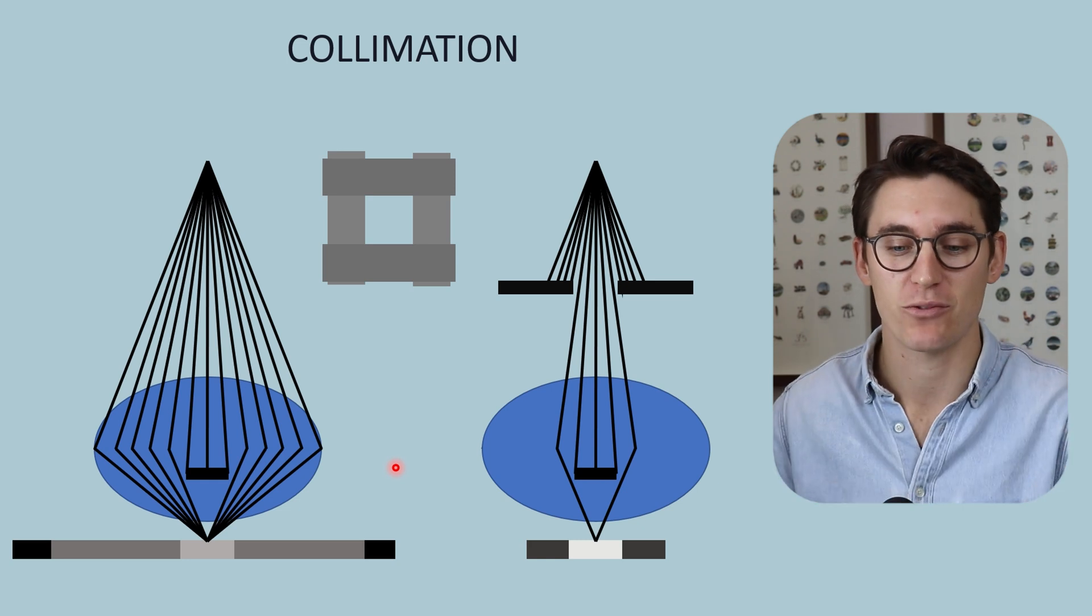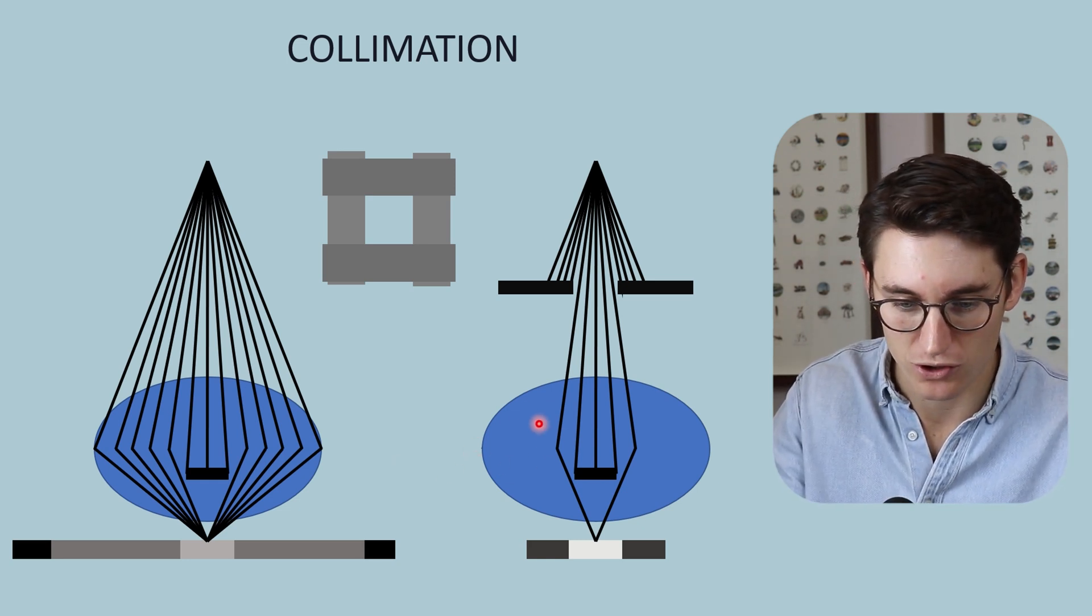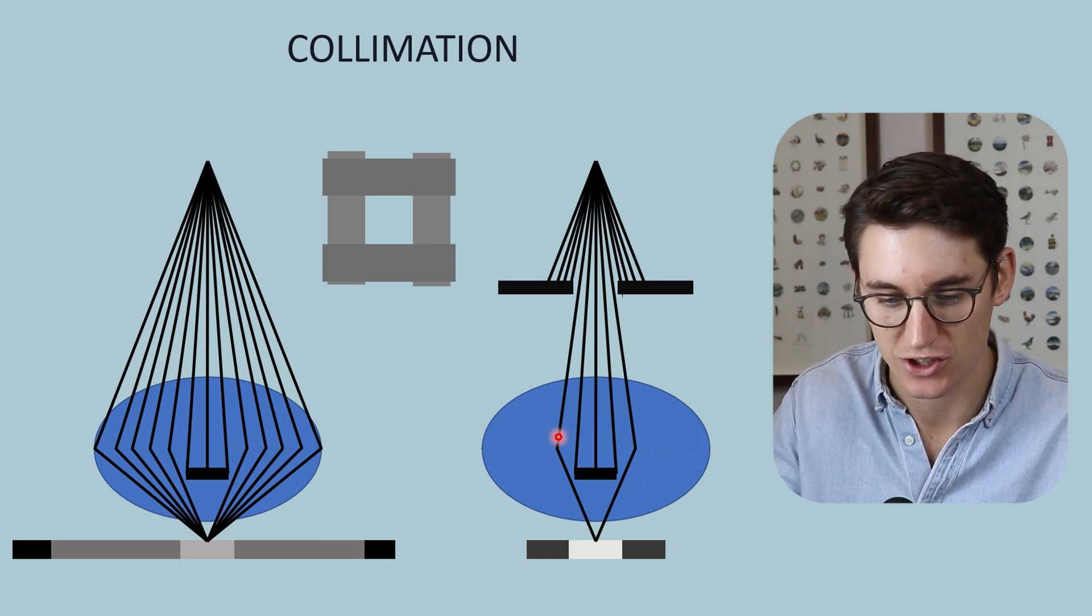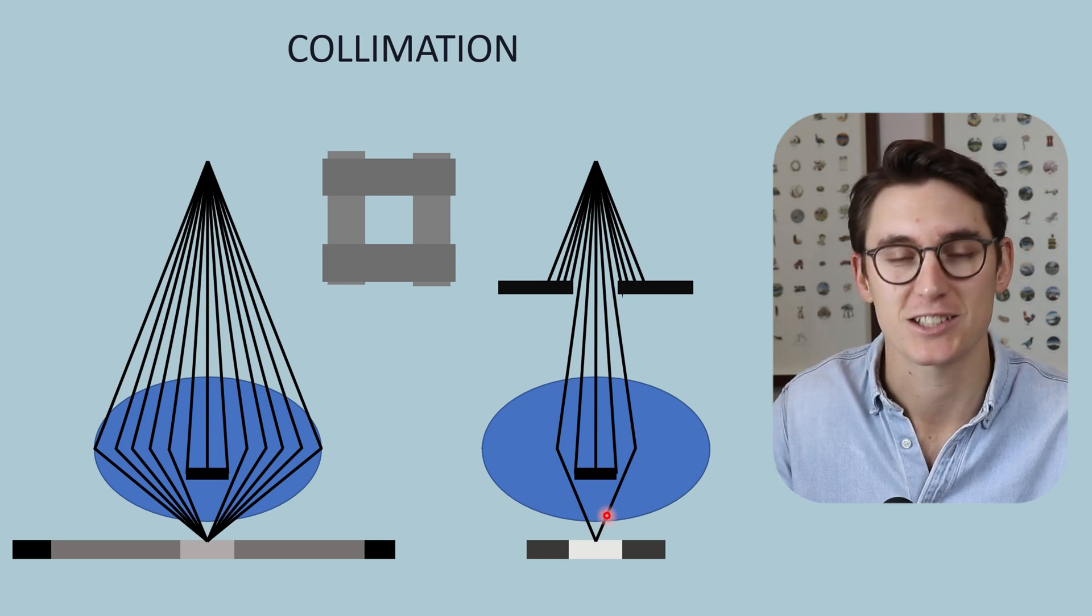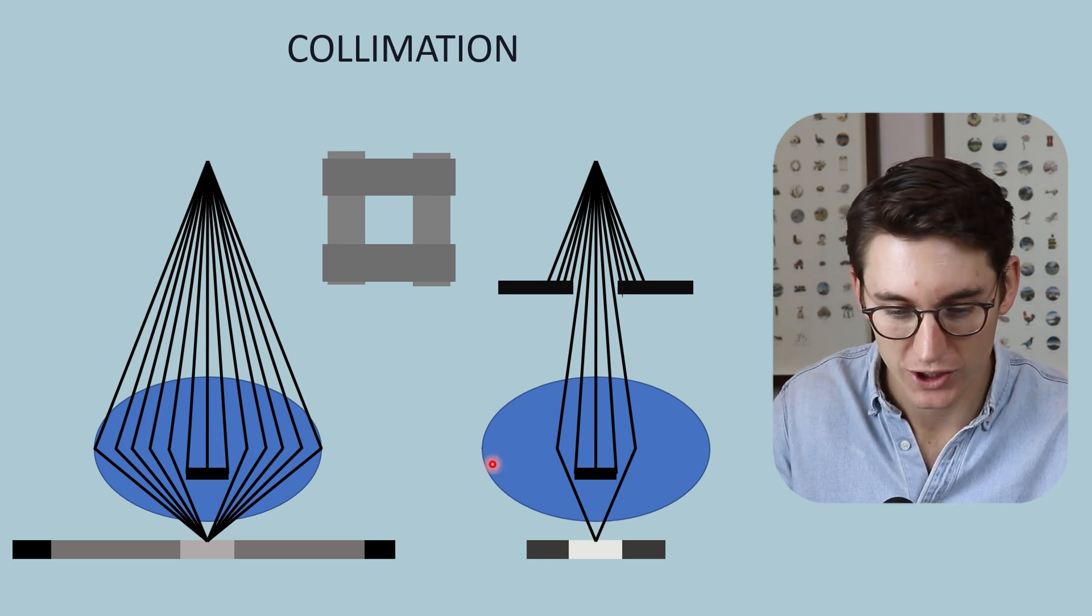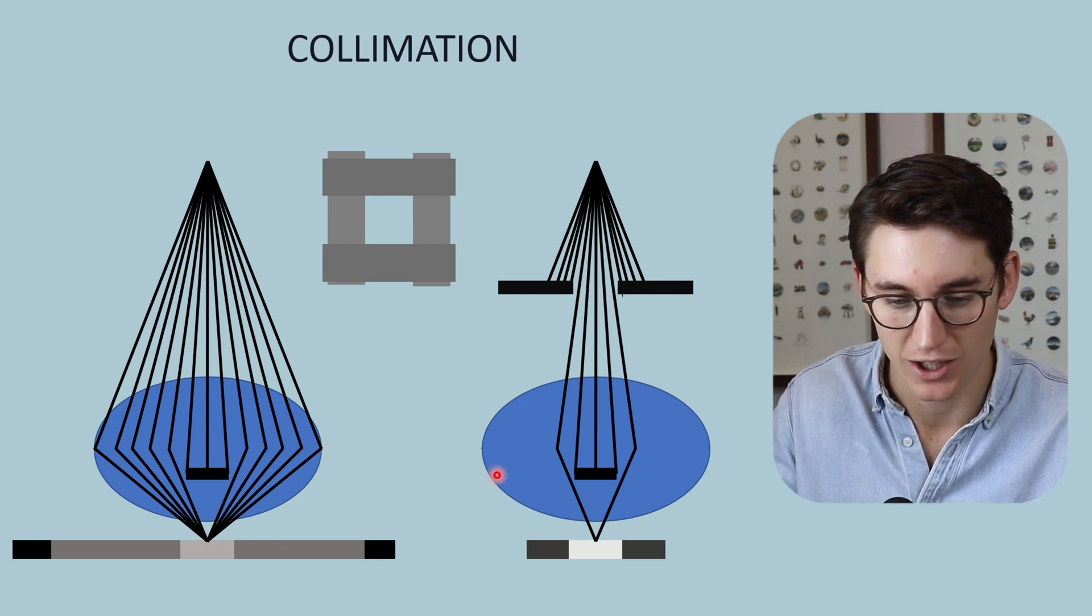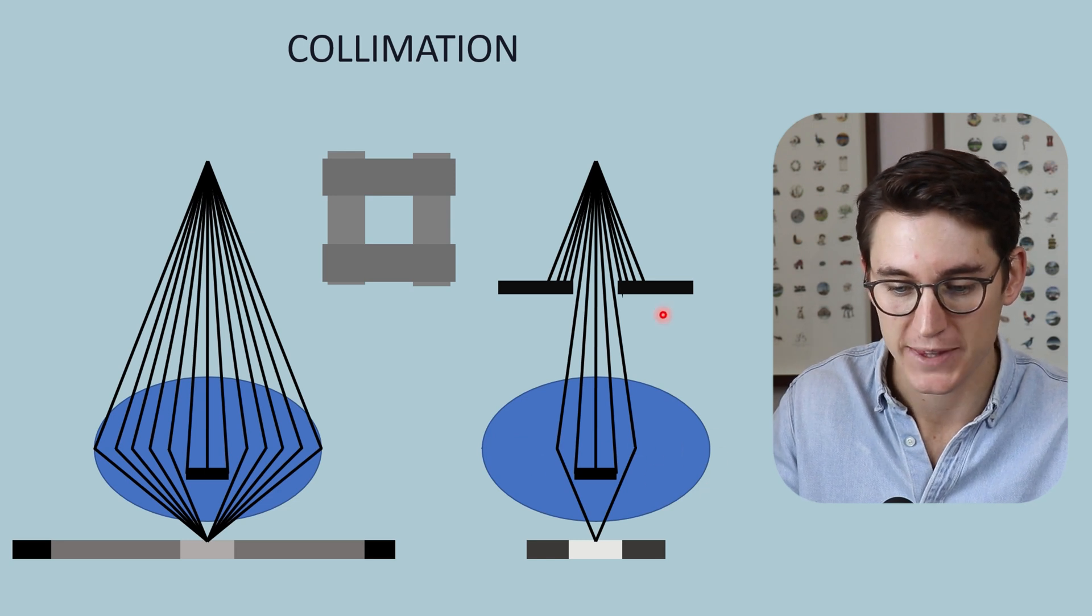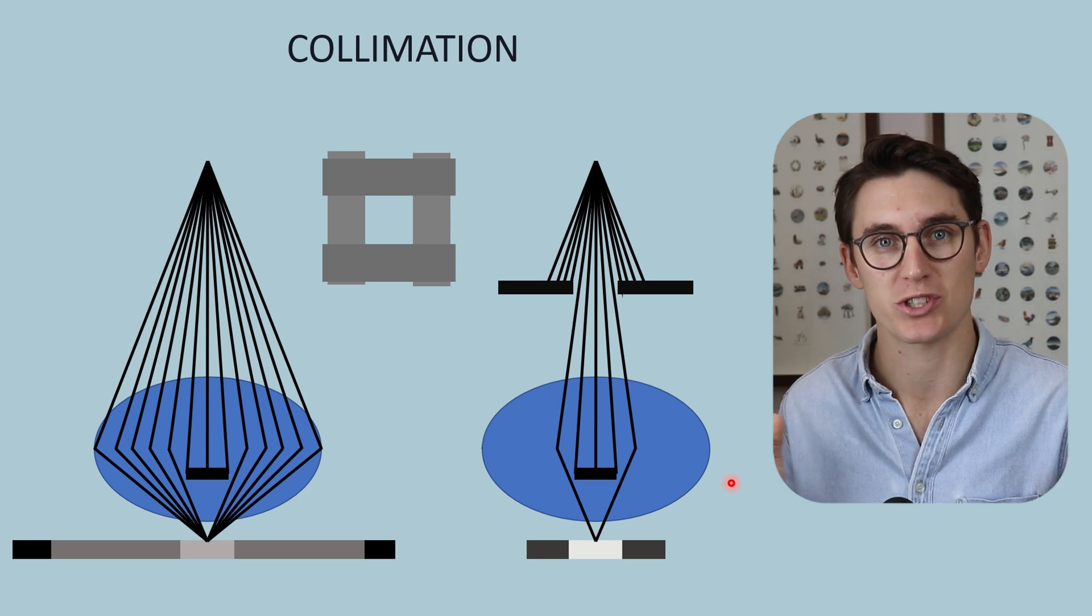If we collimate that field, we decrease the field size, we reduce patient dose because these regions of the patient are not getting ionizing radiation anymore. Only the region that we are looking at is exposed to x-rays. Not only do we decrease patient dose, but we have eliminated all of this scatter here. All of the scatter events that were occurring in these regions of our image no longer are occurring. And this is the best way that we can reduce scatter.